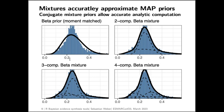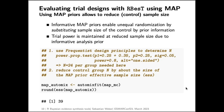Why do we use mixture priors? If you use only a single beta prior moment-matched to the MCMC sample, that is a very inaccurate description of the MCMC result. Whereas if you use a two-component beta mixture prior, it becomes relatively accurate, and a three-component beta mixture prior is essentially equivalent to the full MCMC information. Using even four components would not add any additional accuracy.